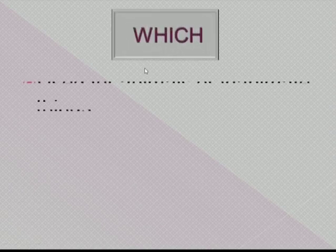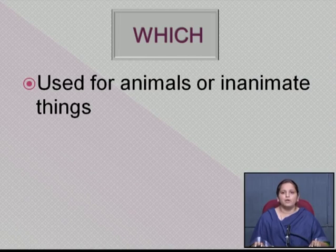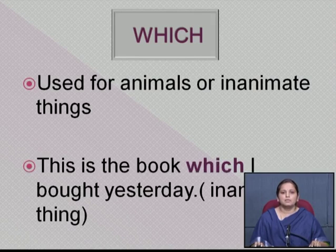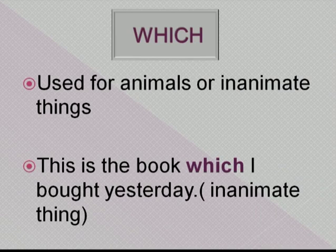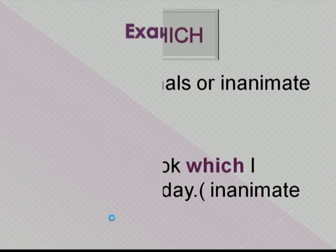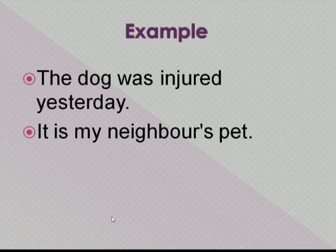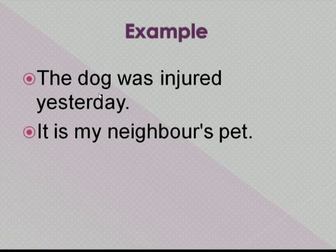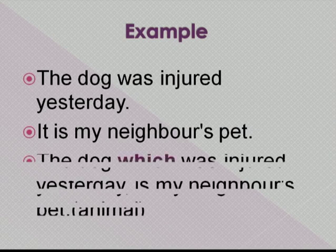'Which' is the connector used for animals or inanimate things. Example: 'This is the book which I bought yesterday' — here 'book' is an inanimate thing. Another example: 'The dog was injured yesterday. It is my neighbor's pet.' Since the dog is an animal, we use 'which': 'The dog which was injured yesterday is my neighbor's pet.'